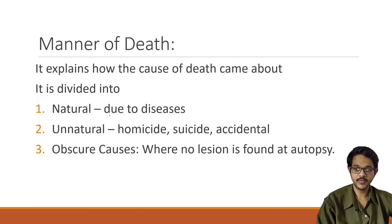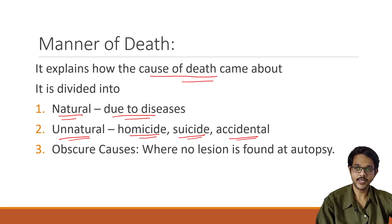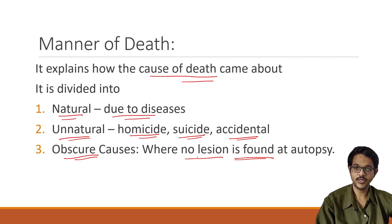Next is manner of death. Manner of death explains how the cause of death came about. It is divided into: natural death — mainly because of diseases, any death related to diseases or infirmities; and unnatural death — which includes homicide, where one person kills another; suicide, where one person self-harms to death; and accidental, where some mishap leads the person to die. One more is obscure causes, where no lesion is found at autopsy and the cause is unknown, so the manner of death remains unknown even after autopsy.